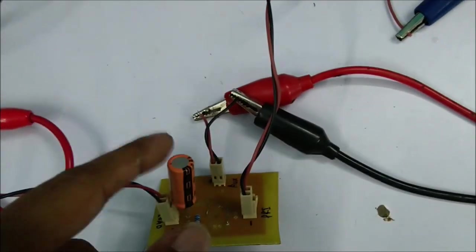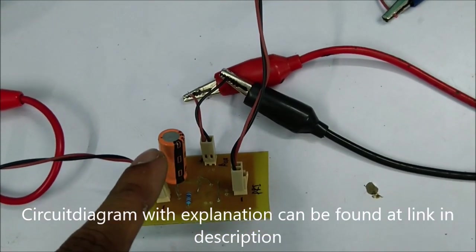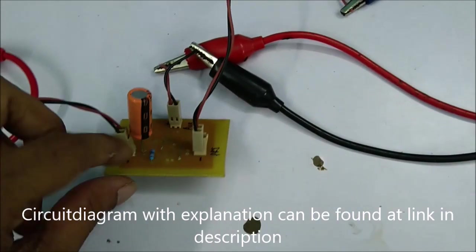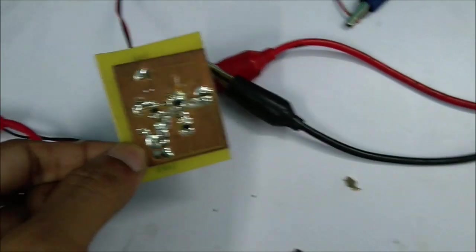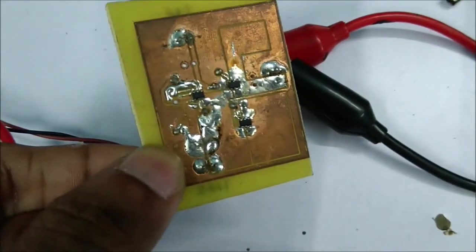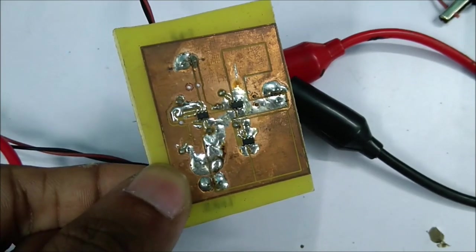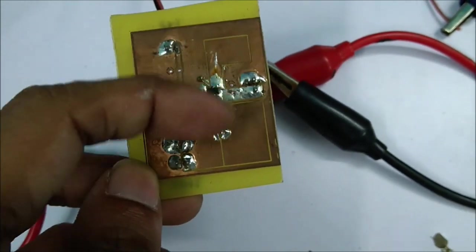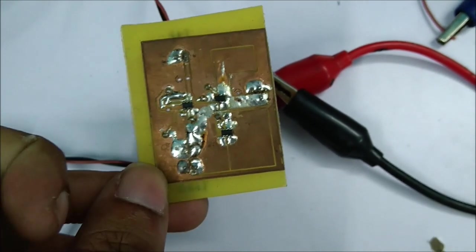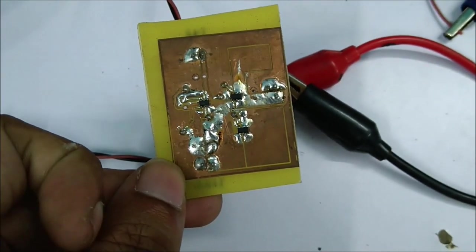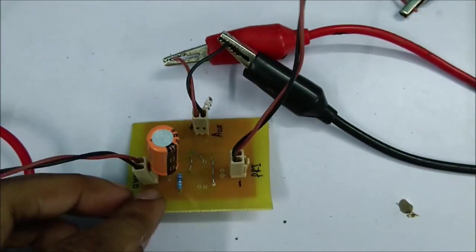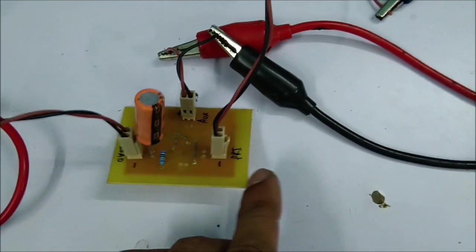The actual circuit is on the backside. This is a hand-etched PCB. Here are two MOSFETs and one LTC4412 chip here. These two MOSFETs are controlling the input stages of the power path. This circuit is already working.